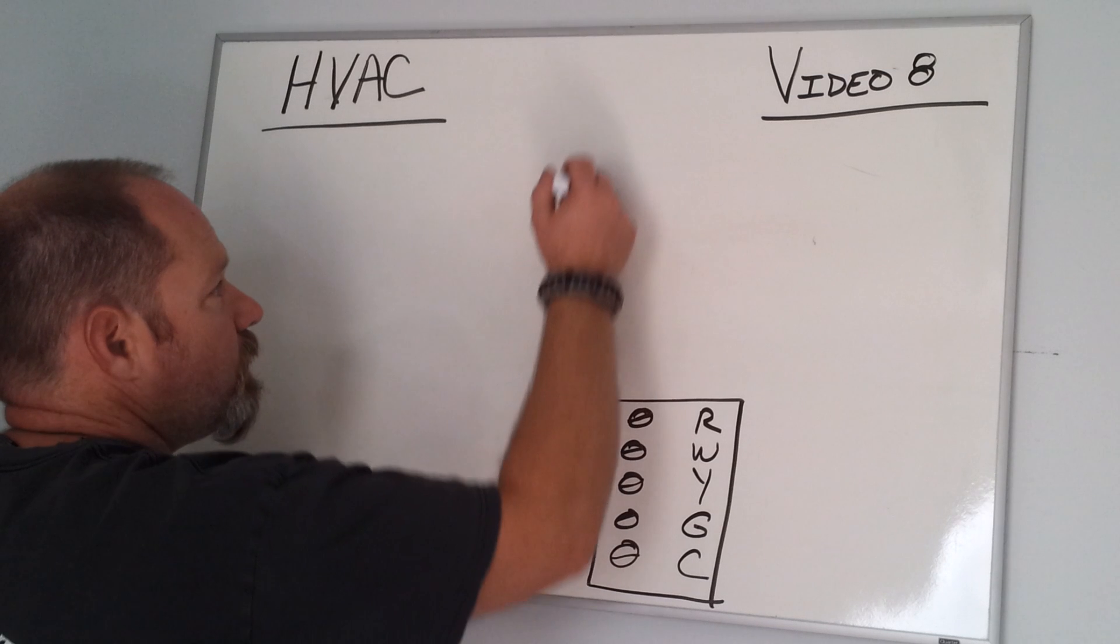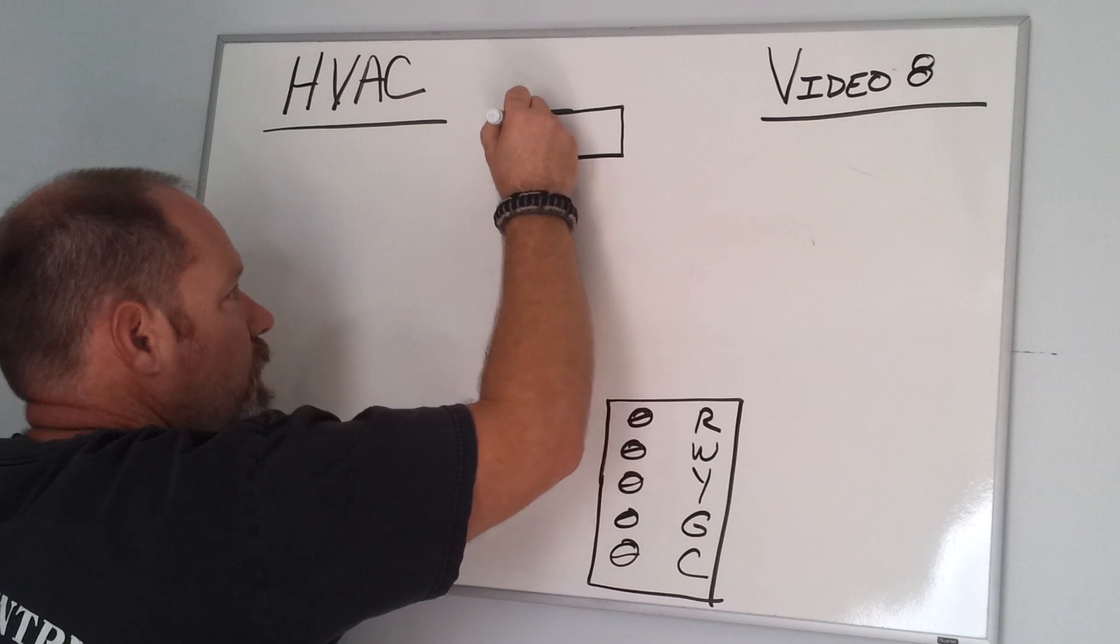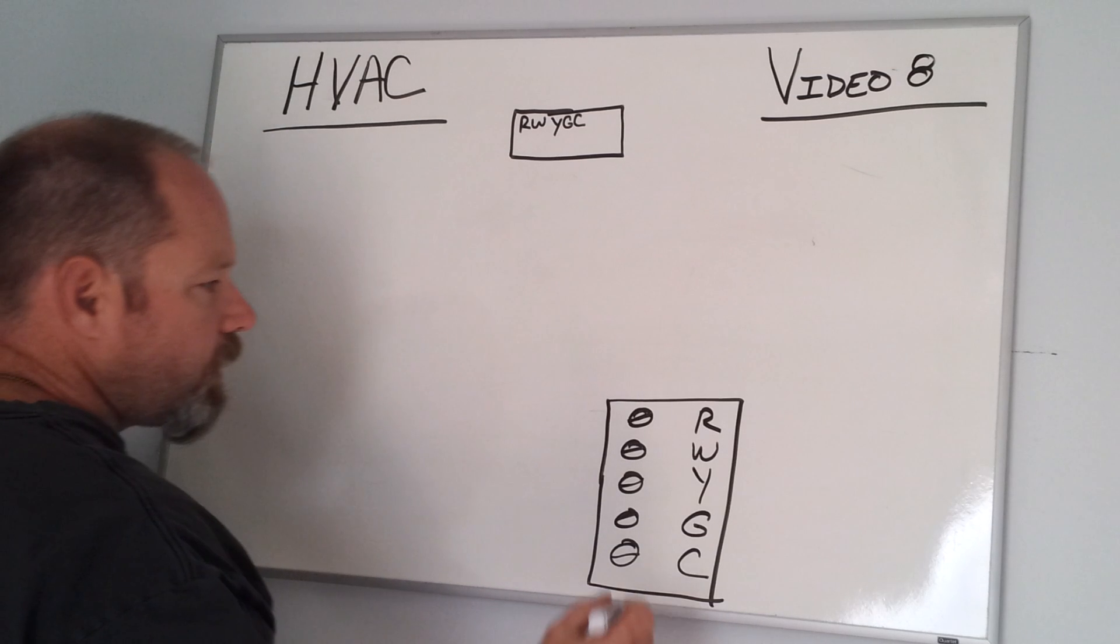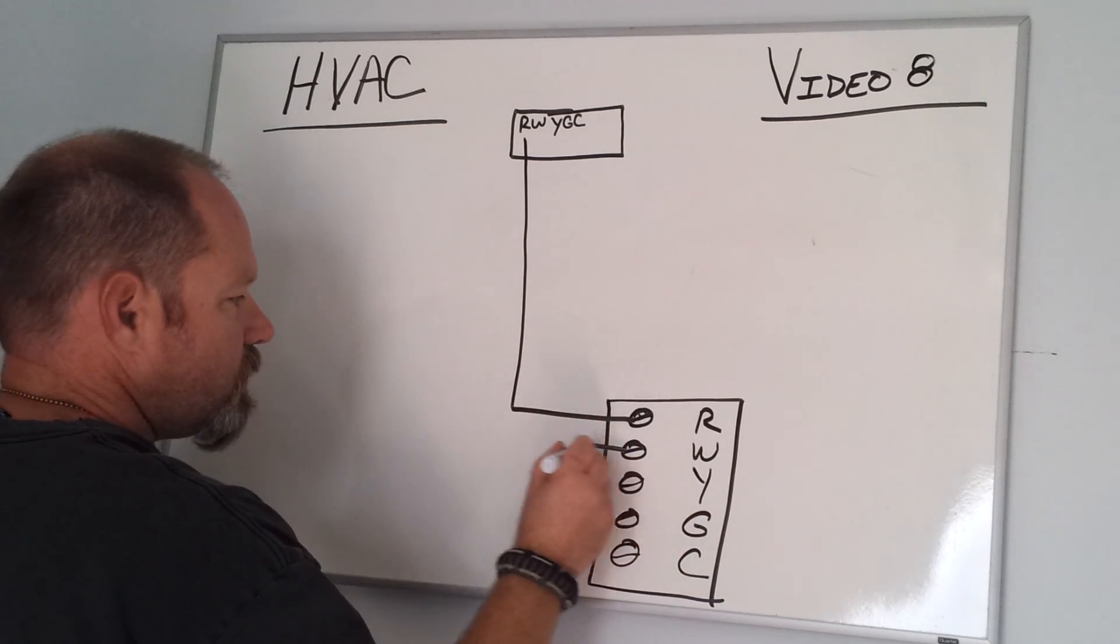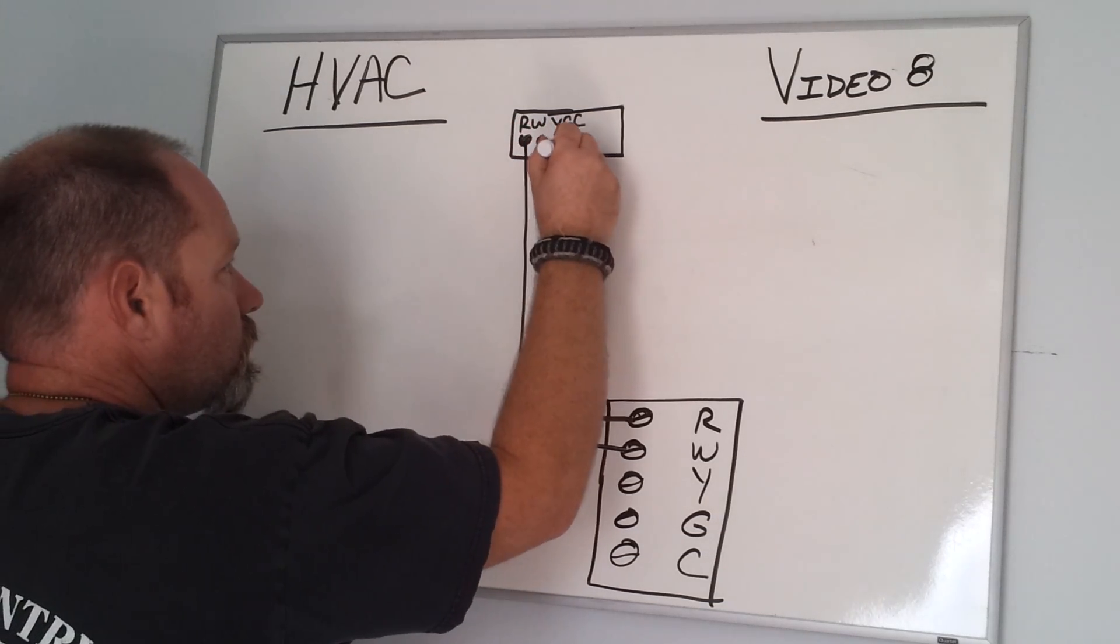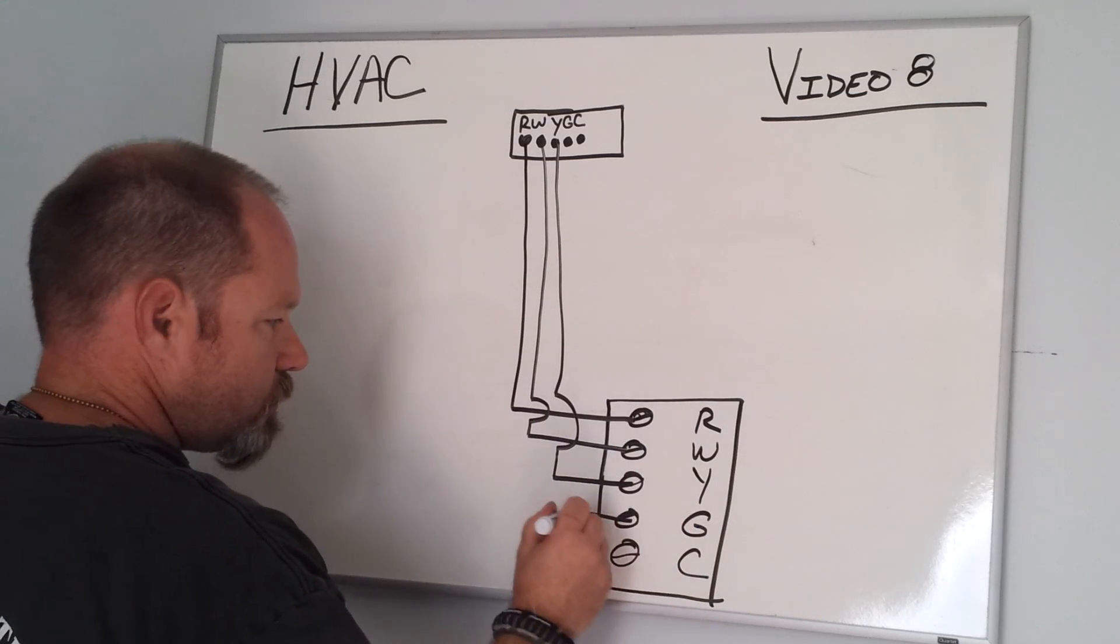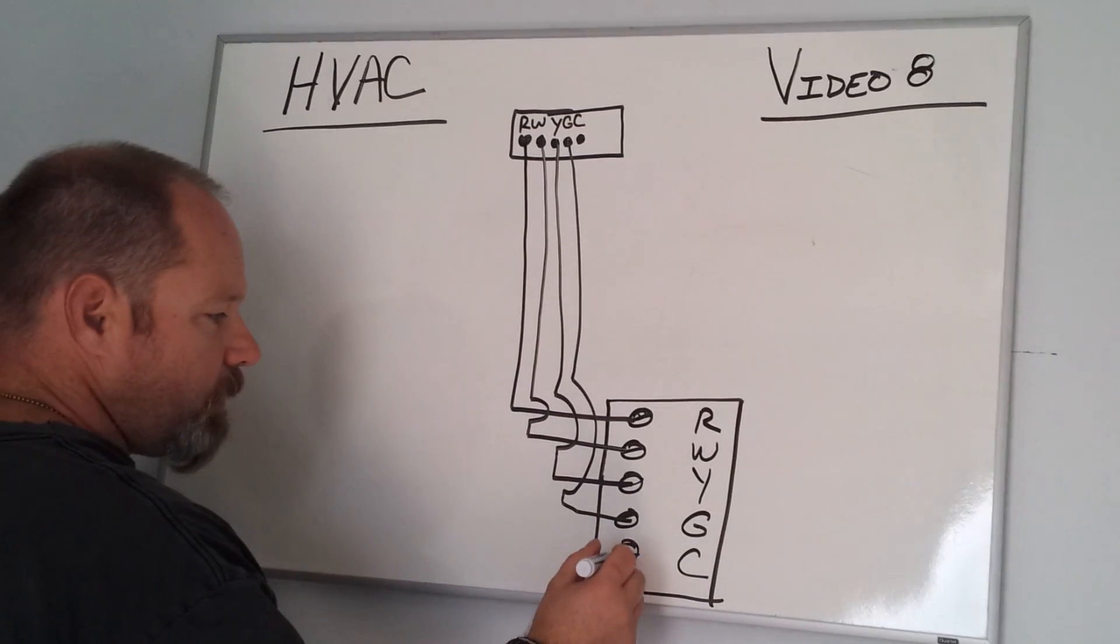Now your thermostat is going to have the same connections on it—R, W, Y, G, and C. May not be in that exact order, but it's real simple. When you connect R to R and you connect W to W and Y to Y and G to G, and then C may or may not be connected depending on which type of thermostat you have.